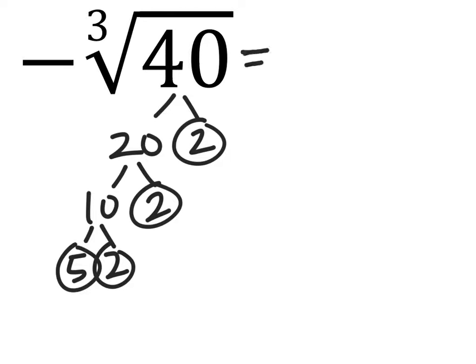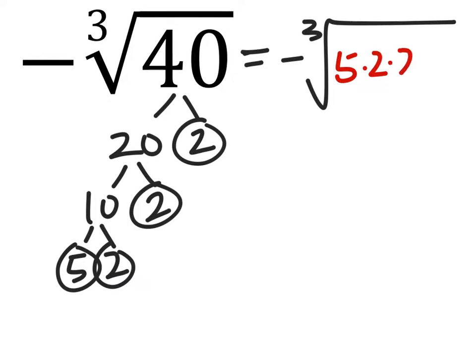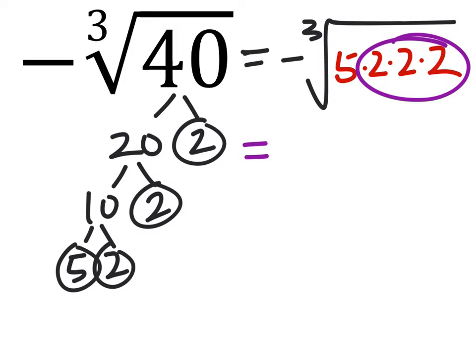So this ends up being a negative cube root of 5 times 2 times 2 times 2. And here's our triple radical. So the final answer is negative 2 times the cube root of 5.